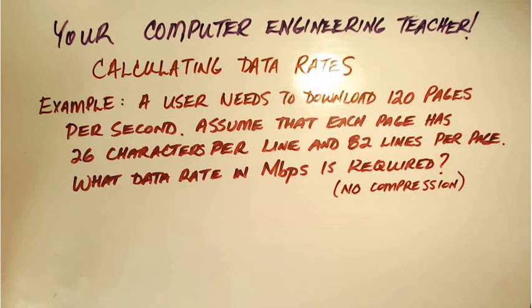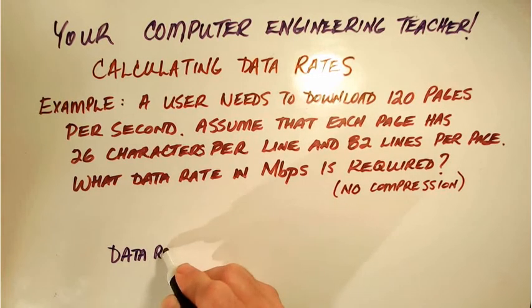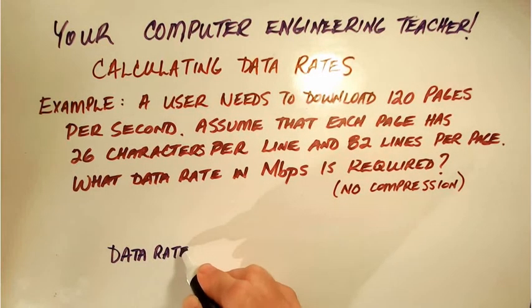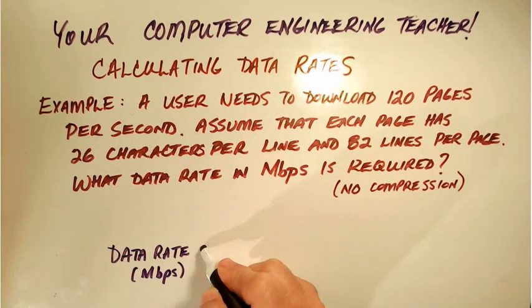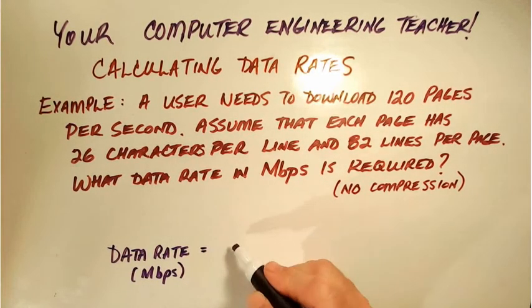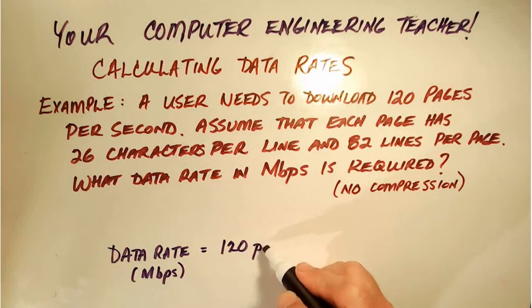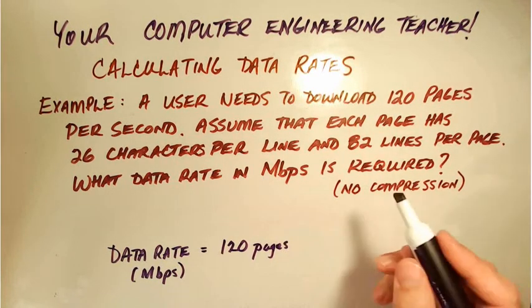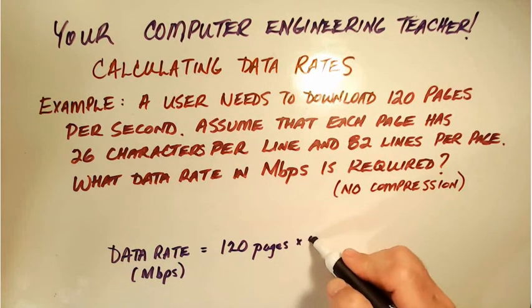So if we want to calculate the data rate in megabits per second, we need to figure out how much data there is. So there's 120 pages that we want to download per second, and we're going to assume that each page has 82 lines, and there's 26 characters per line.